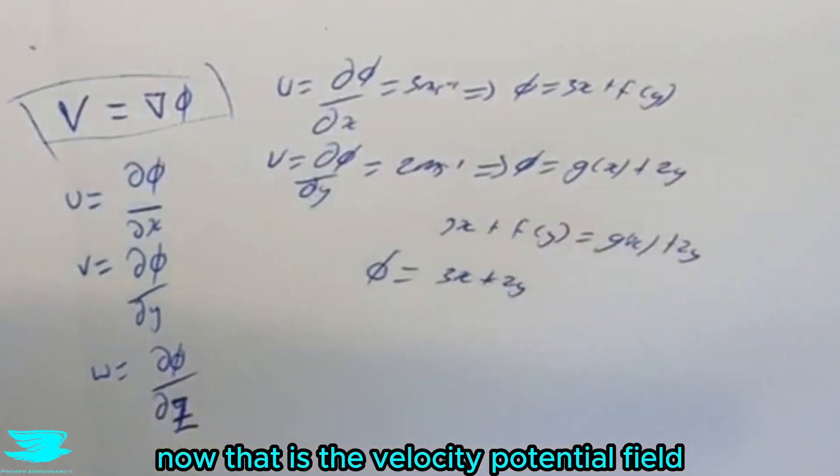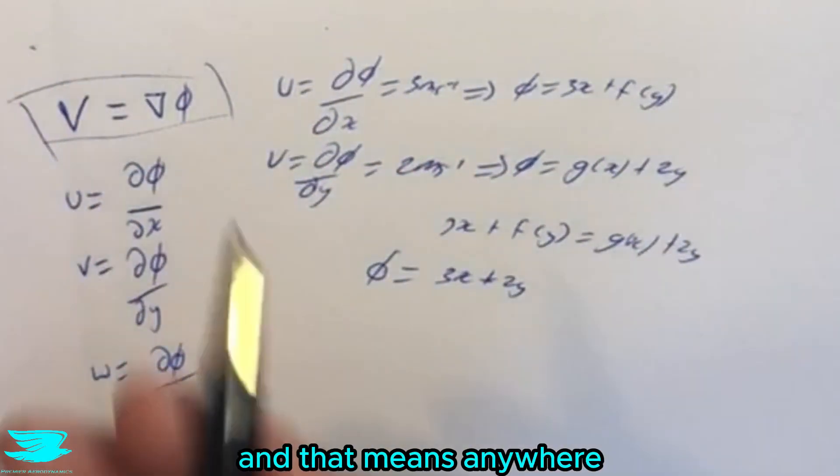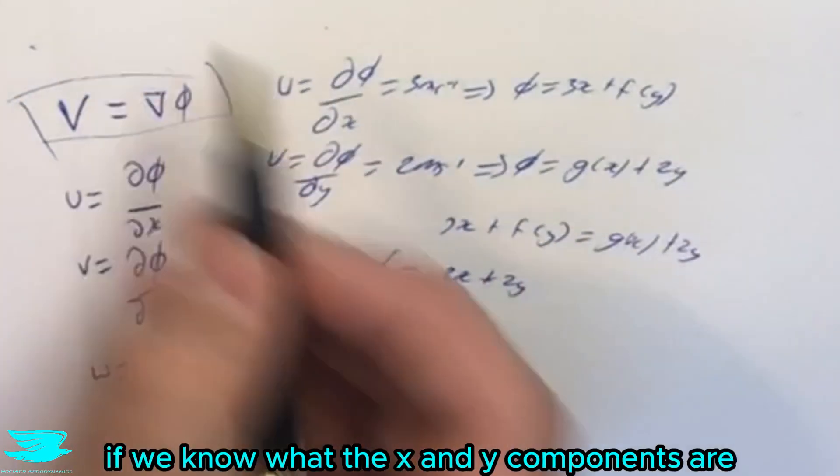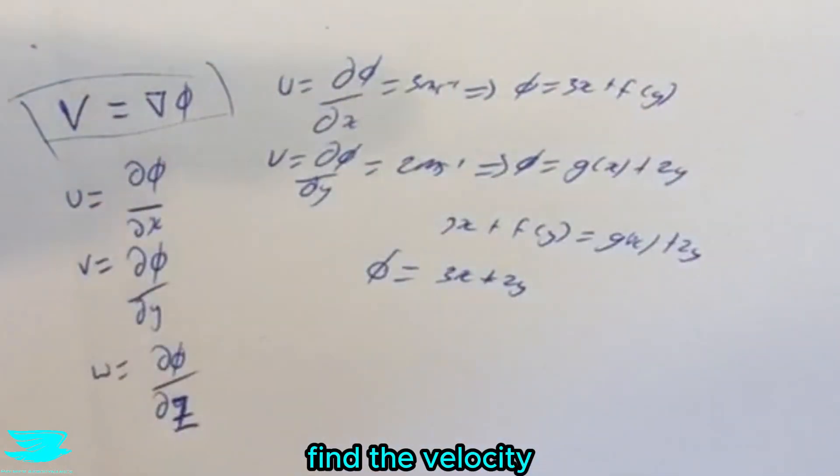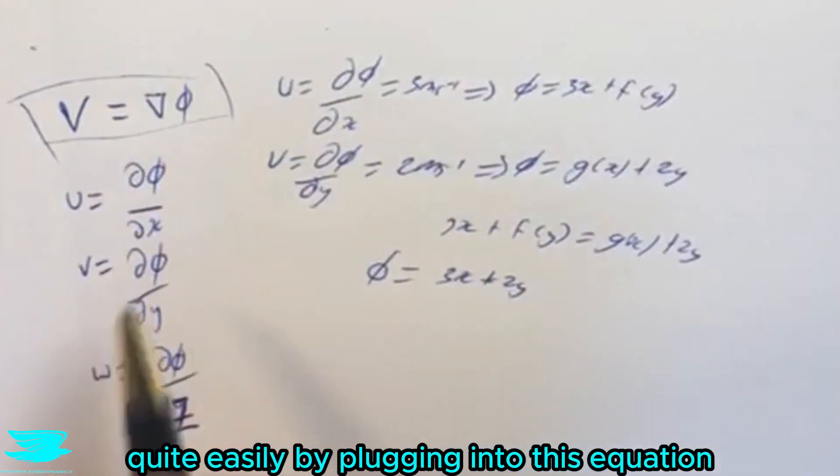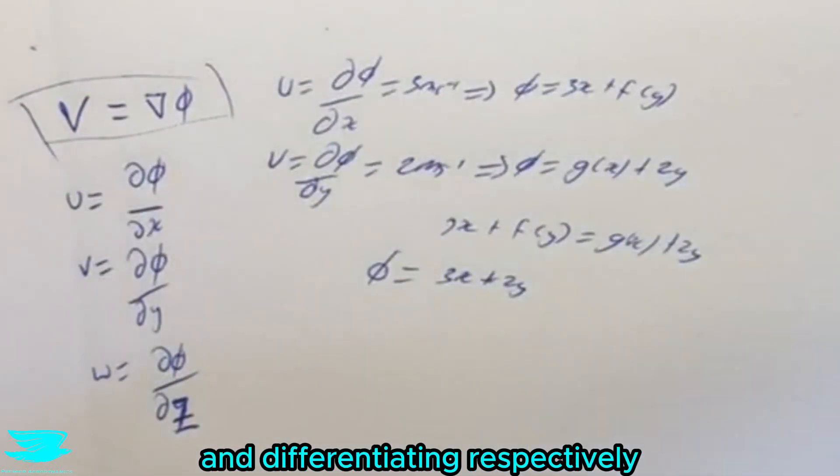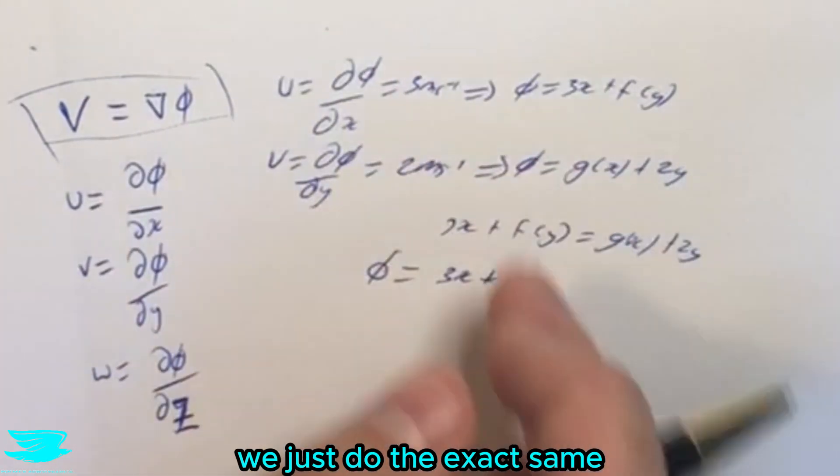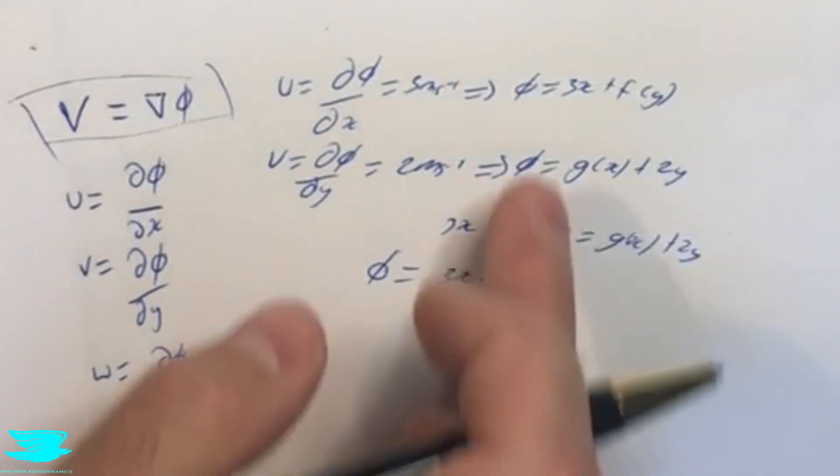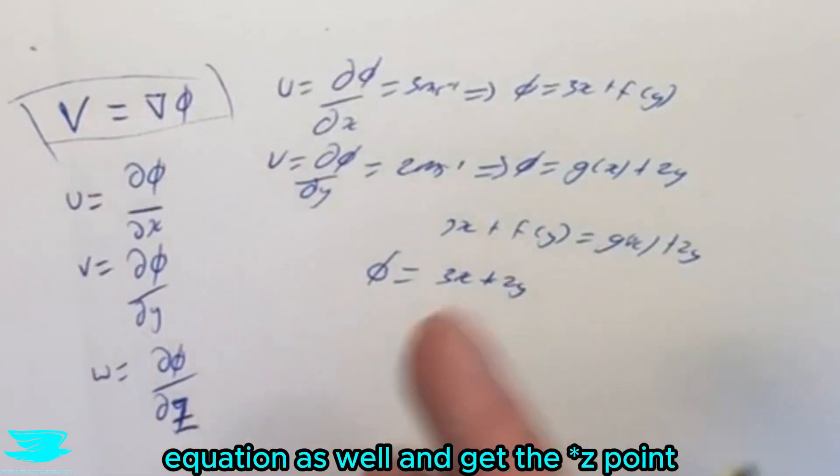Now that is the velocity potential field and that means anywhere we go in this potential field, if we know what the x and y coordinates are, we can then find the velocity quite easily by plugging it into this equation and differentiating respectively, and if we had the z component we'll just do the exact same thing with the third equation as well.